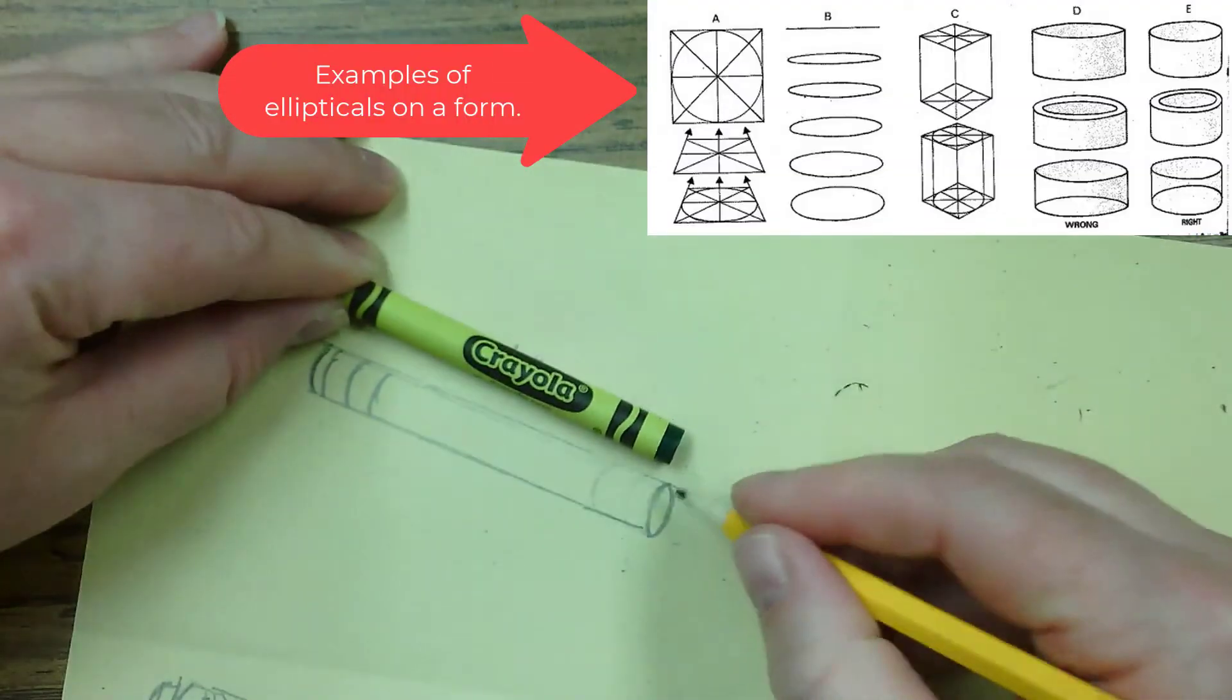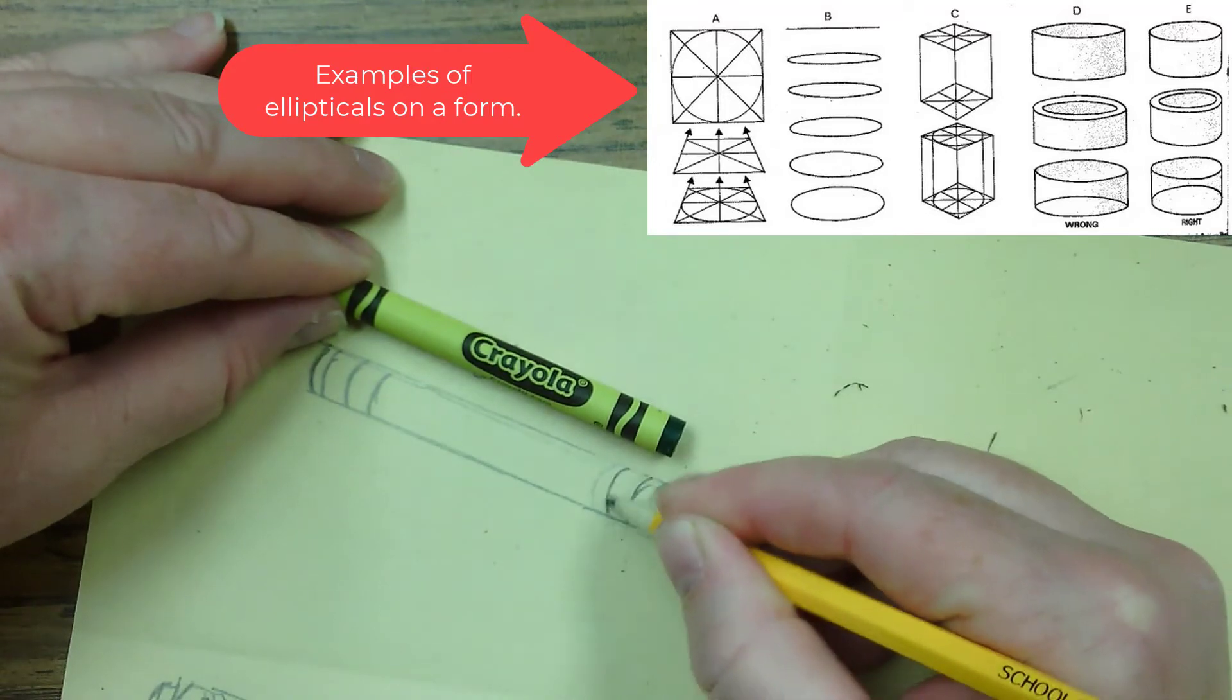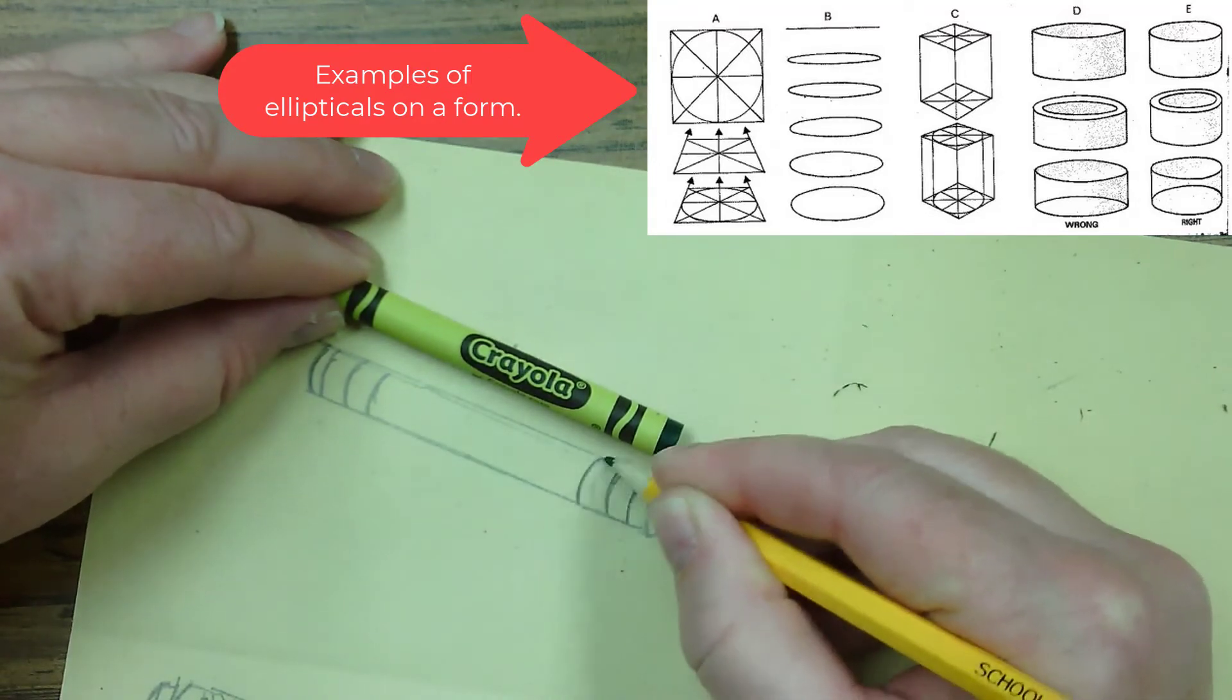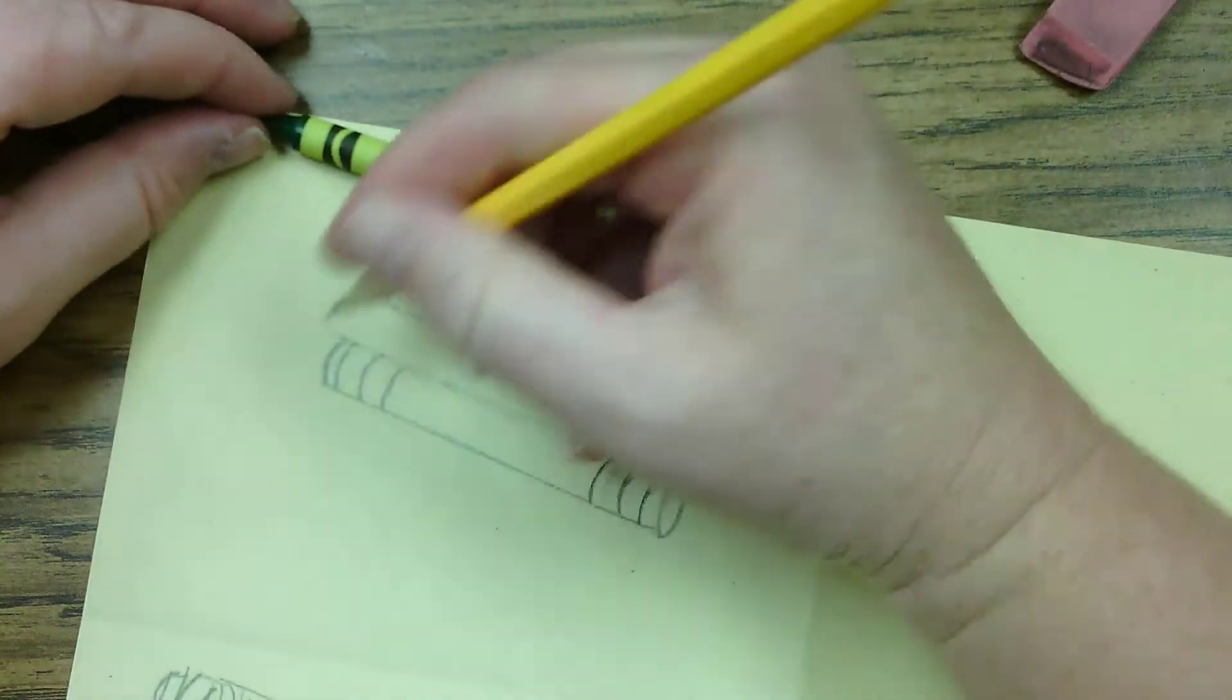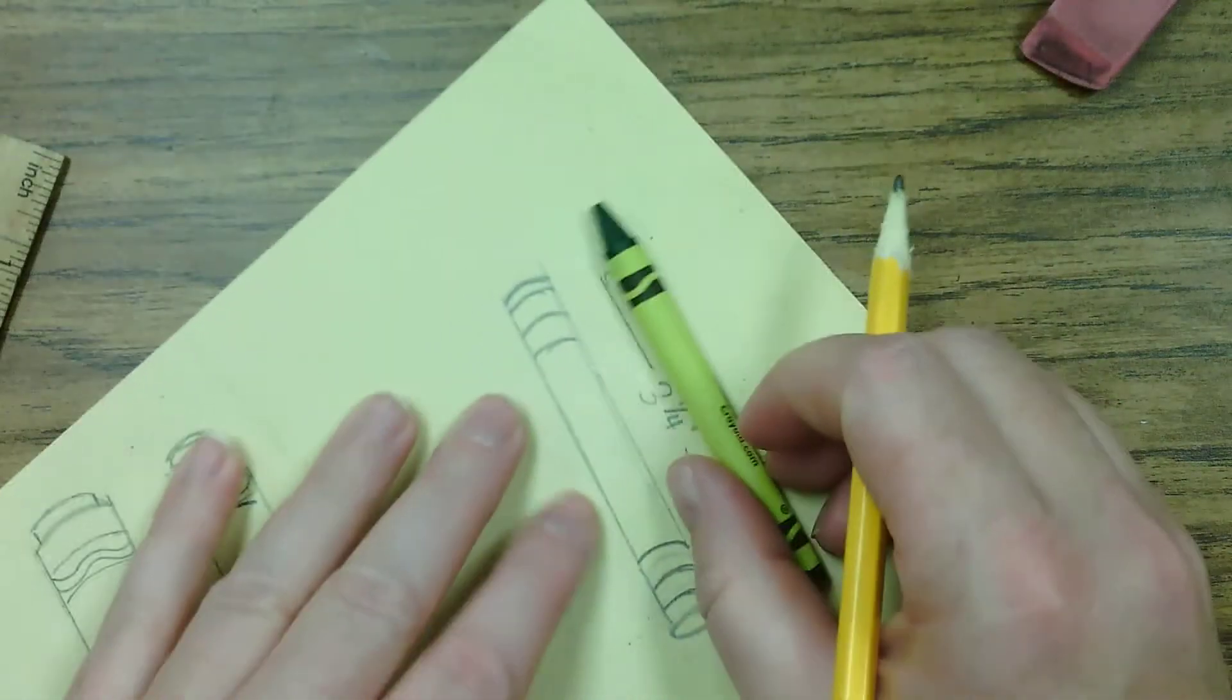And notice the bottom of the crayon is drawn in an elliptical circle or like a squished oval. I'm adjusting my lines. I was off just a little bit.